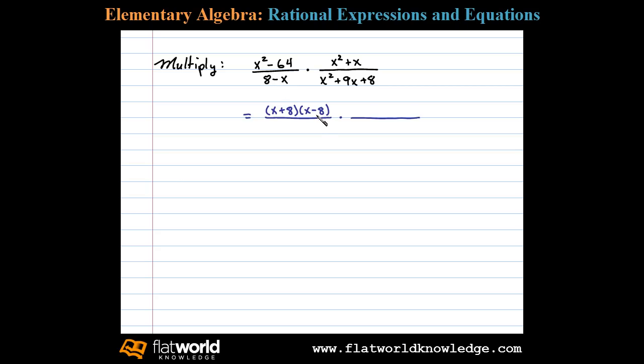Now I notice we have an opposite binomial factor here in the denominator. Let's go ahead and factor out a negative 1 and that'll leave us with x minus 8.